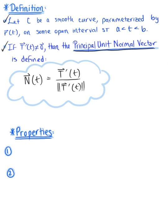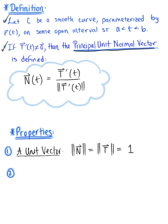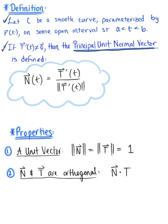We have also observed some properties of the principal unit normal vector. It is a unit vector, so the magnitude of N equals the magnitude of T, which equals 1. Another property is that the principal unit normal vector and the unit tangent vector are orthogonal — they are perpendicular vectors. A great way to check that our computations are accurate is to note that the dot product of N and T should equal zero. With that, let's go ahead and look at some examples.